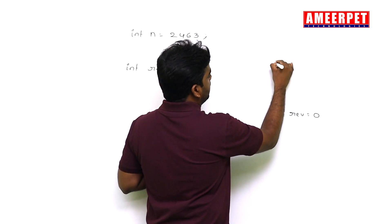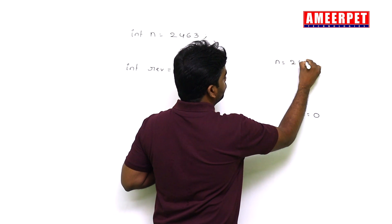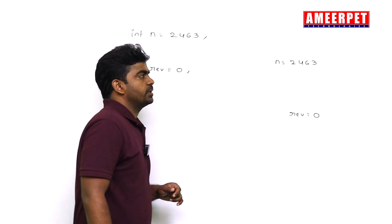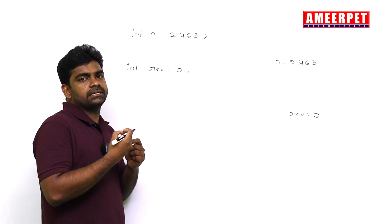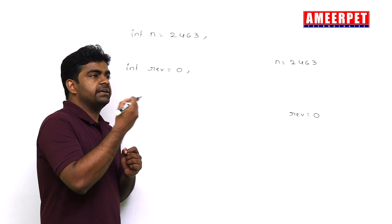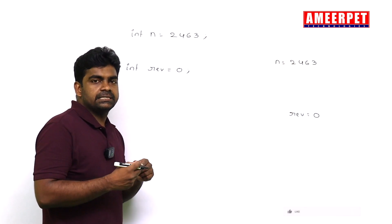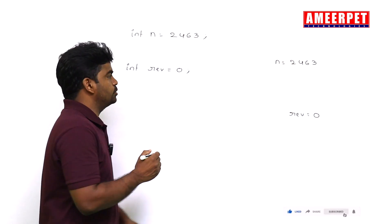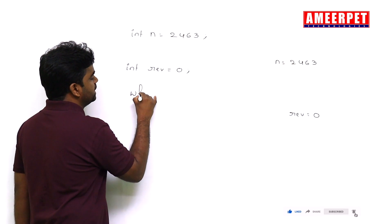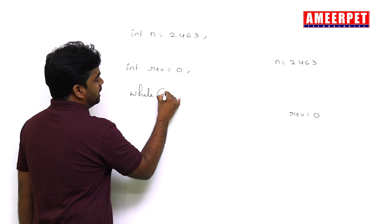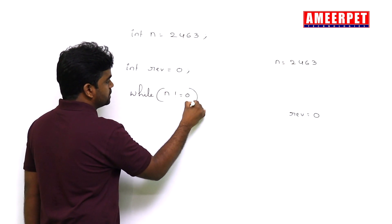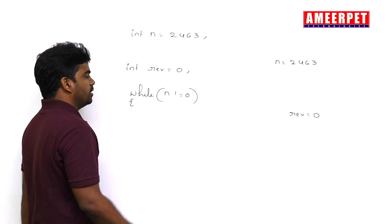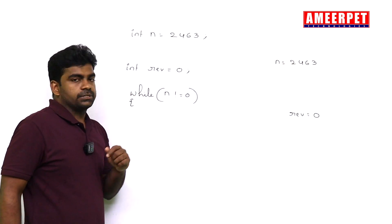Now n value I have taken is 24632, same digit by digit operations only. Every time getting the digit, working with the digit and remove the digit until n value becomes zero. So I am not changing the condition, while n not equals to zero, I am not changing the condition.